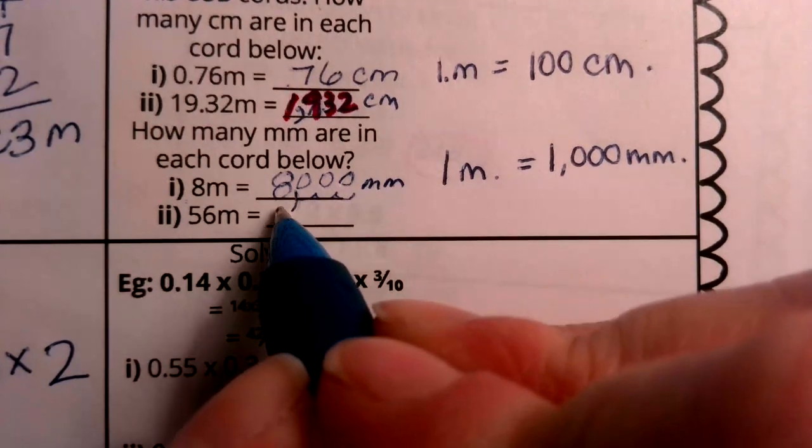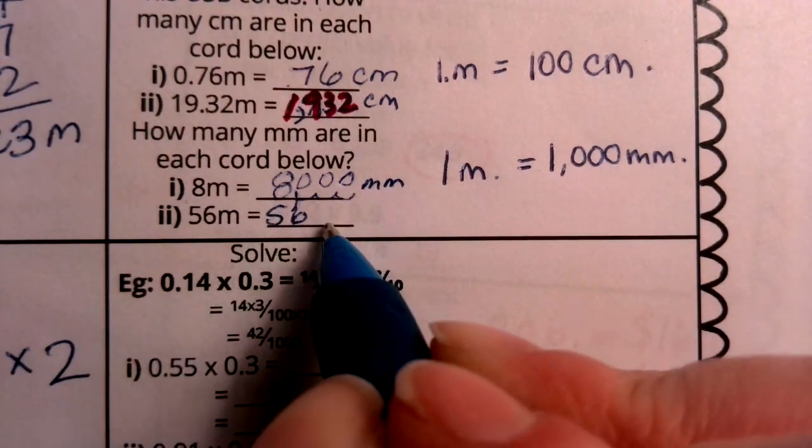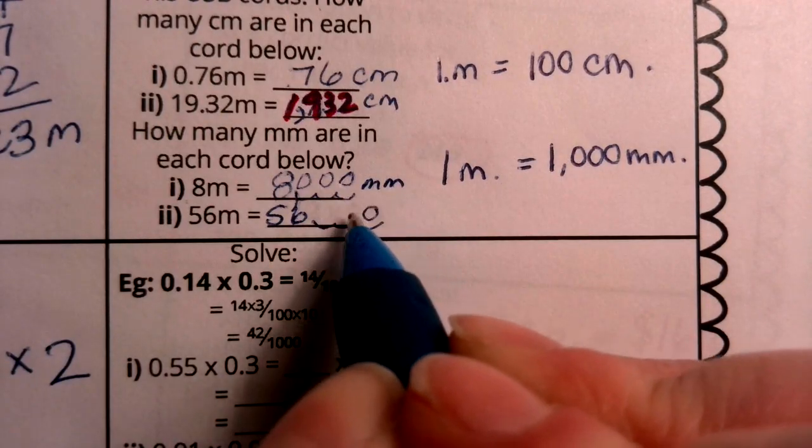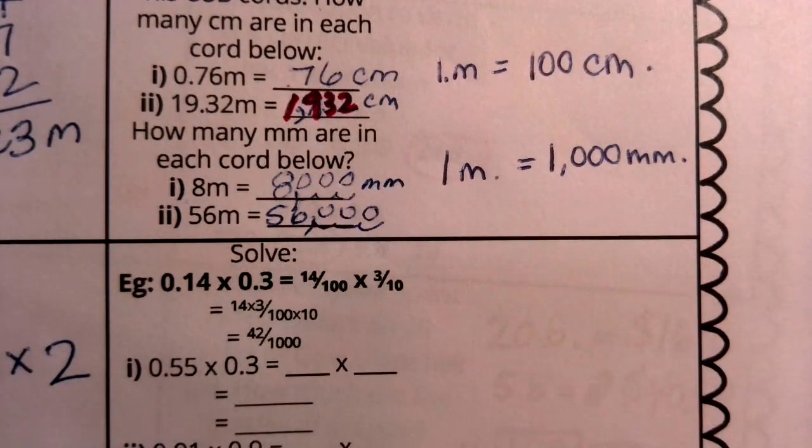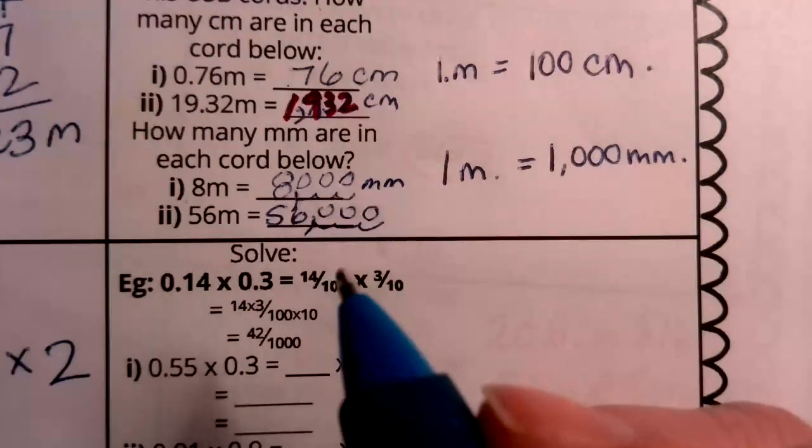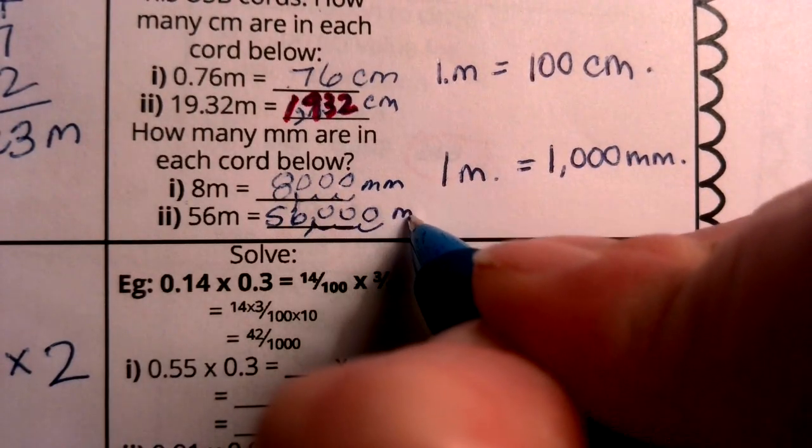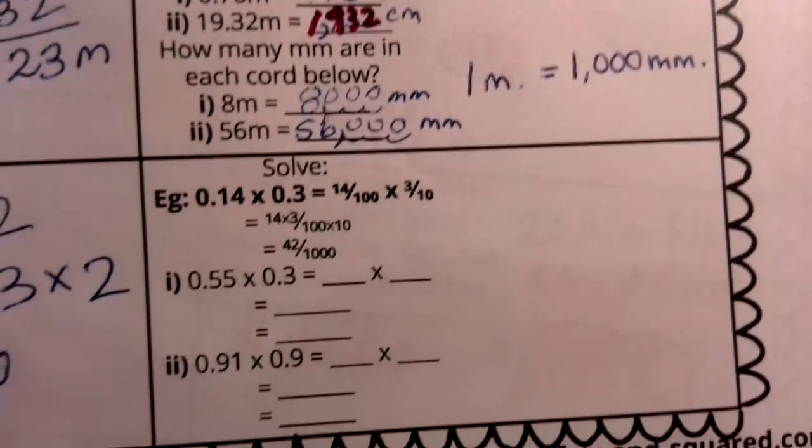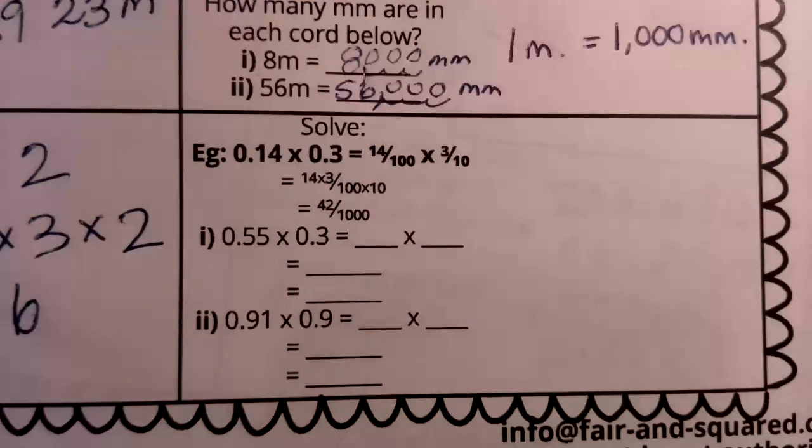Our next one is 56 meters. We're going to move our decimal three times to the right. One, two, three. We're going to plug in those zeros. And we have 56,000 millimeters in 56 meters. All right, let's finish this week strong. Just one more question.